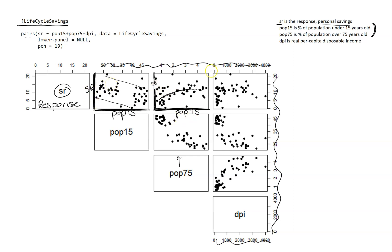Finally, this very last graph again has SR on the y-axis, and since this is our last variable, the x-axis has DPI. The relationship between SR and DPI seems a little bit more clumped. I've got a little clumping there, and it does almost look like there's a slight hint of a curve. One of the things we have to assess is linearity, and I could use the scatterplot matrix to assess a linear relationship between our response and each one of the explanatory variables.